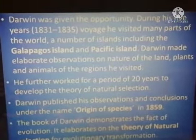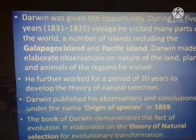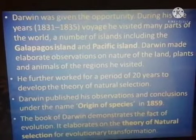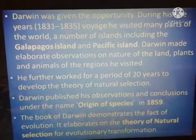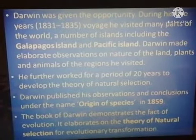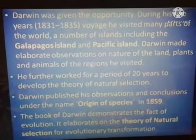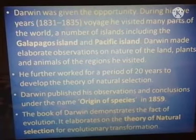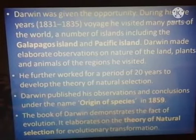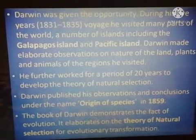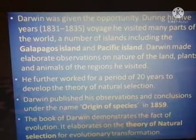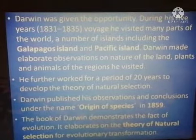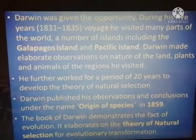Darwin was given the opportunity. During his five years — 1831 to 1835 — voyage, he visited many parts of the world, a number of islands, including the Kalapakos Islands and Pacific Islands. Darwin made elaborate observations on the nature of the land, plants and animals of the regions he visited.